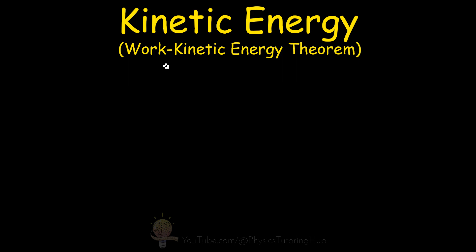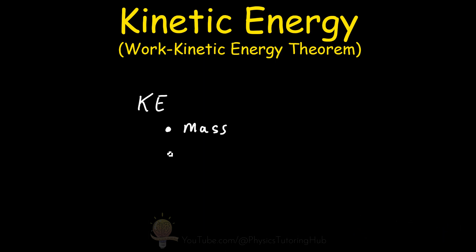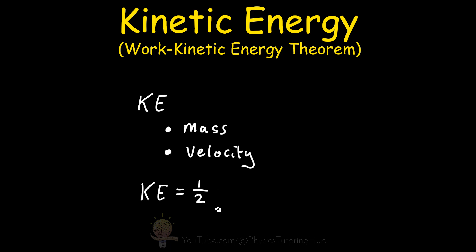Any object that is moving with some kind of velocity has kinetic energy, and the amount of kinetic energy depends on two things: the mass of the object and the velocity of the object. The equation for kinetic energy is KE = ½mv², and the kinetic energy varies more greatly with the velocity than it does with the mass.